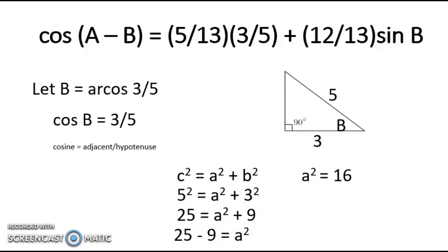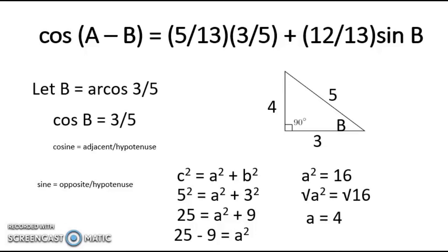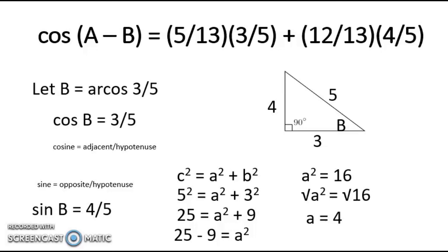Extracting the square root of both sides, we have square root of A squared equals square root of 16, which is positive and negative 4. We disregard negative 4, so our opposite side is 4. We know that sine is equal to opposite over hypotenuse. So sine B is equal to 4 over 5. Then let's substitute this into the formula.